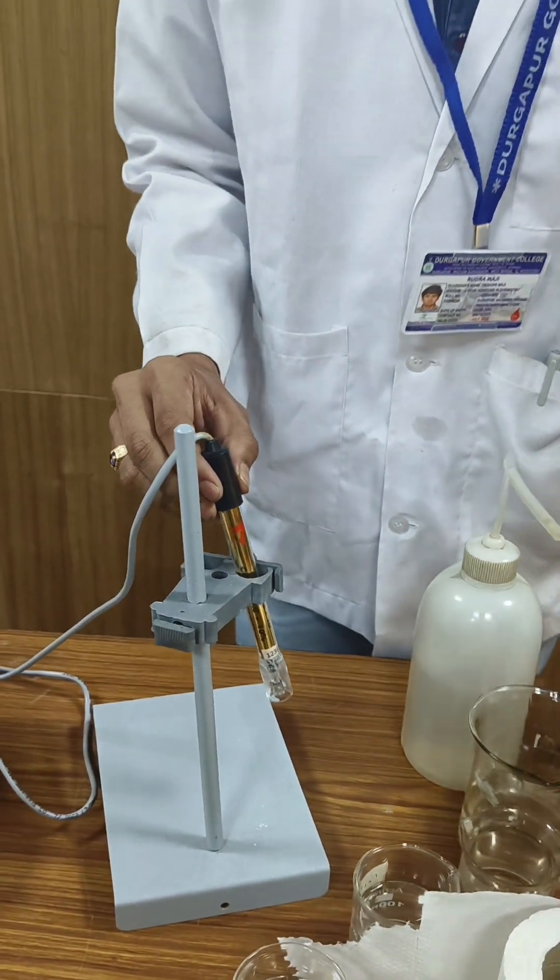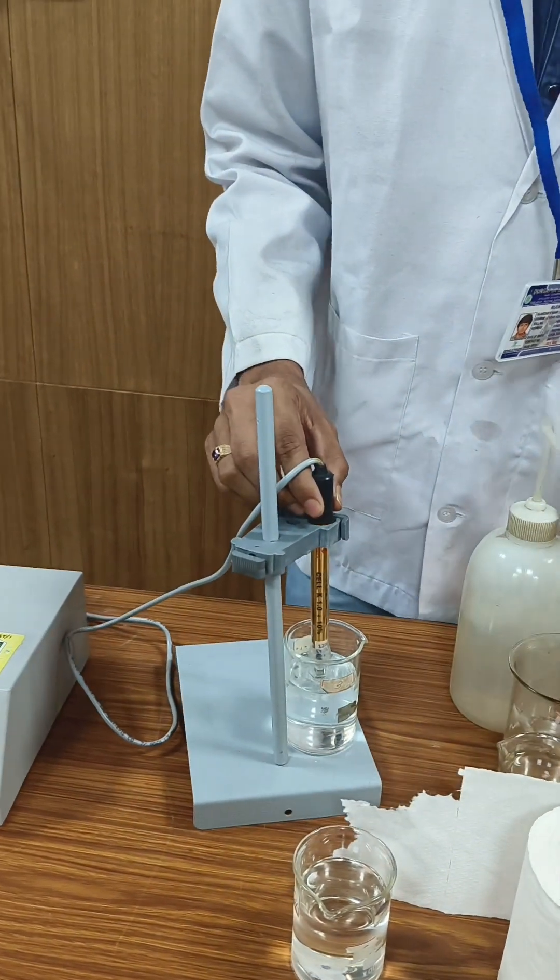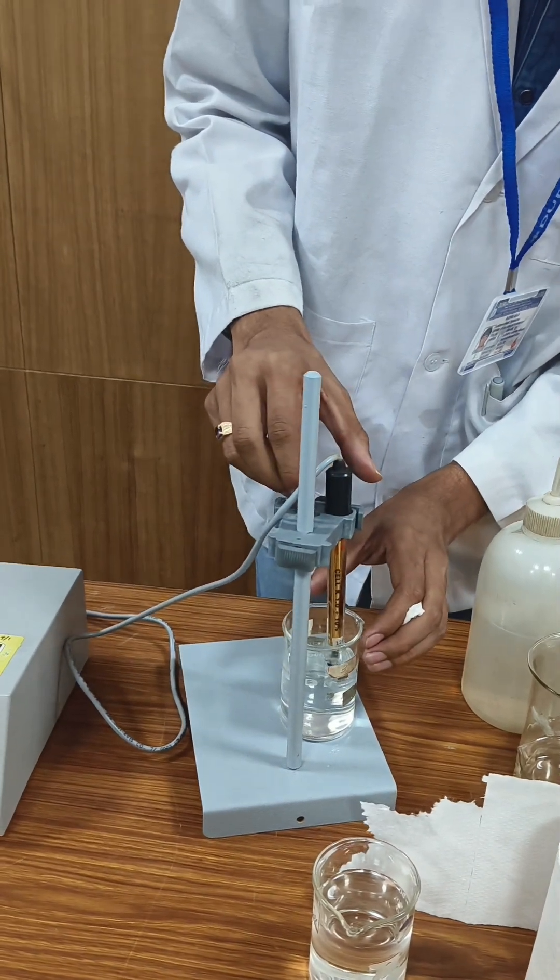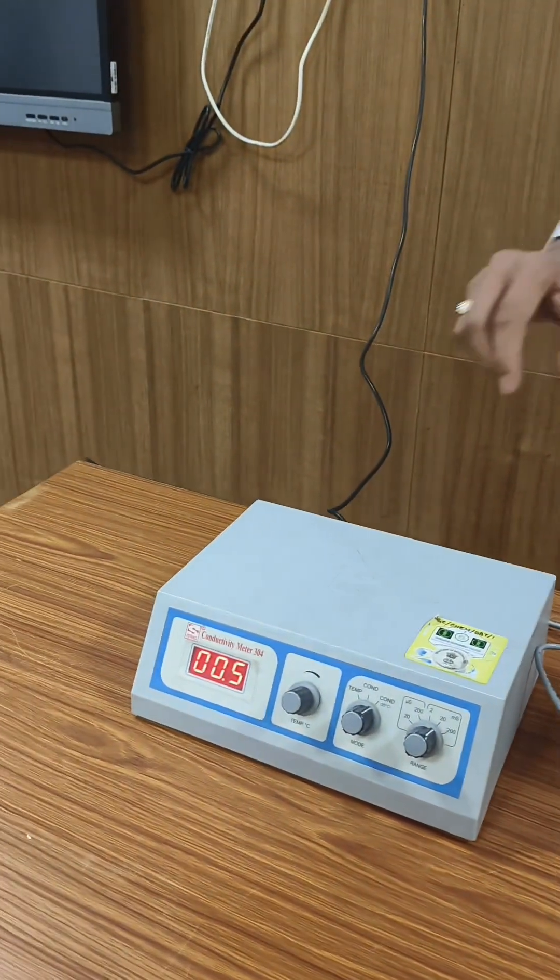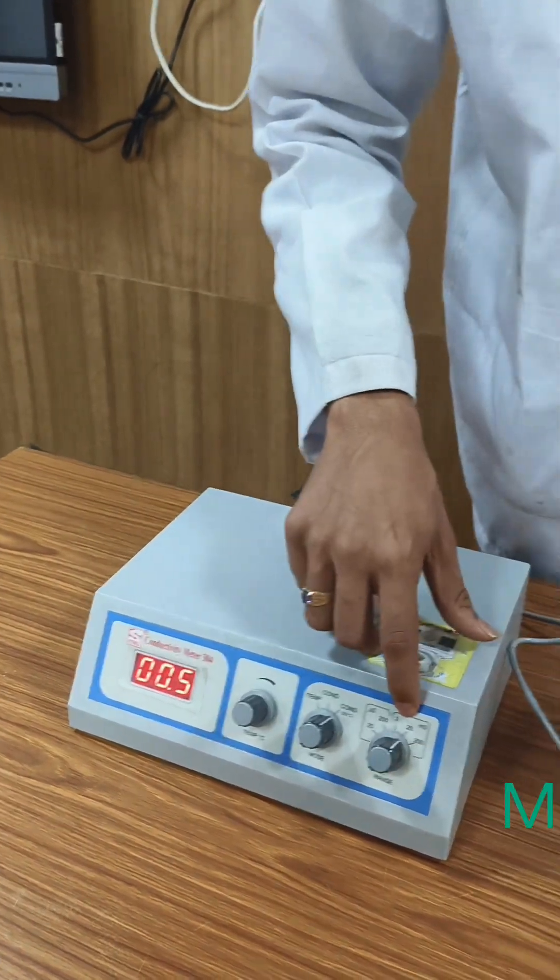Now we measure a water sample's conductivity. We can see the first sample conductivity is 0.5 microsiemens.